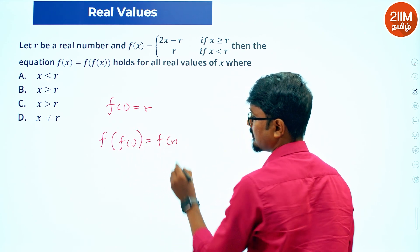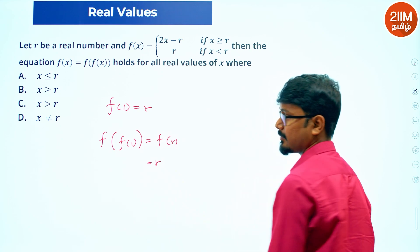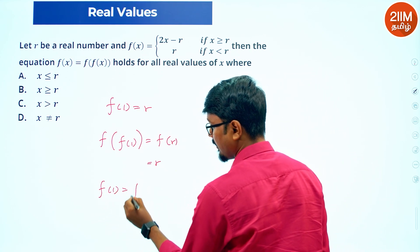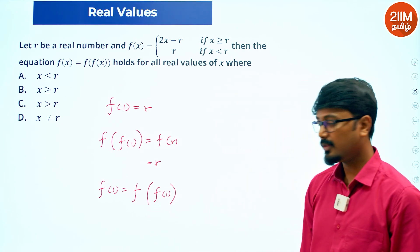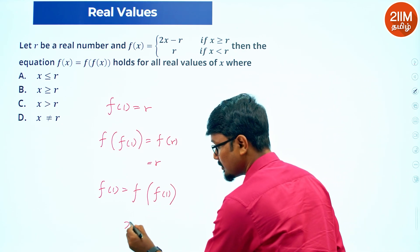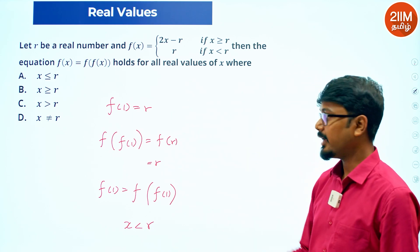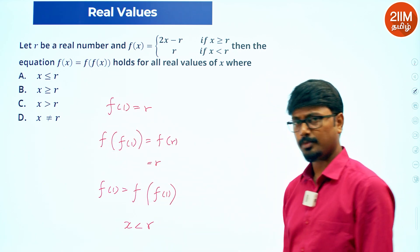First, let's check the left side value. When x is less than r, f of f of x will be the same, r. Correct? When x is less than r, the function is working such that f of f of x will be the same, r. So x less than r works.